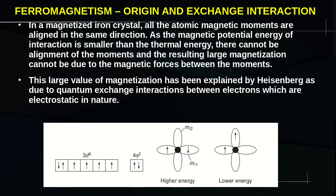ML is the azimuthal quantum number, indicating the orientation of the orbit. This gives a reduction of Coulombic repulsion between electrons. Consequently, the electrostatic interaction energy is minimized. This phenomenon of electrons occupying parallel spin states with different ML values is known as the exchange interaction.